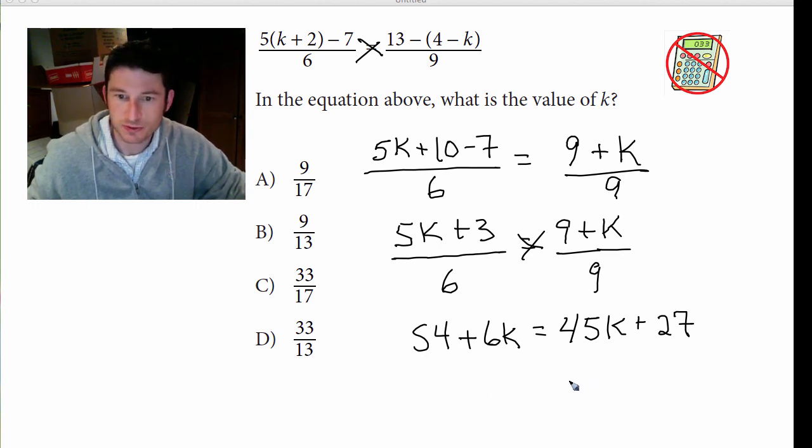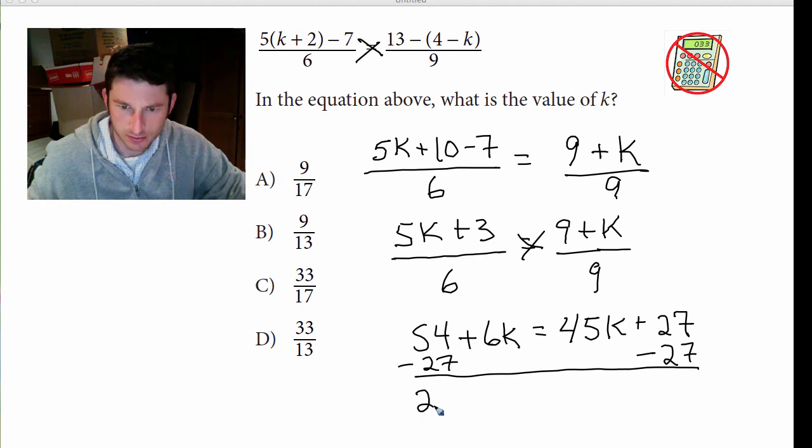Okay, now let's just move some things around. I'll move the 27 over there. So we get, I think that's 27, right? 27 plus 6k equals 45k.